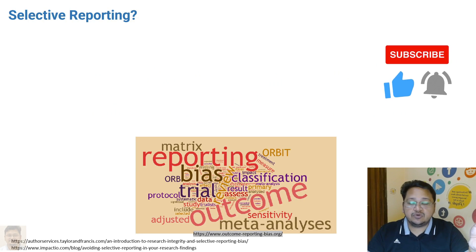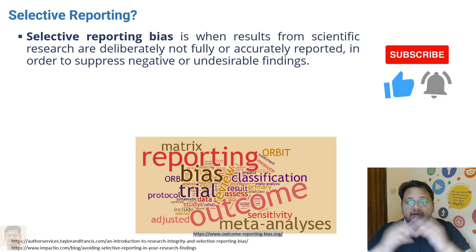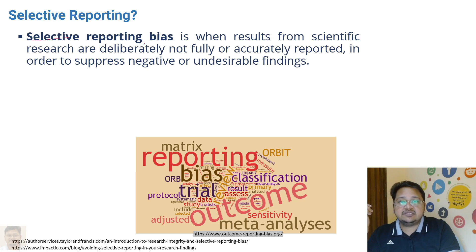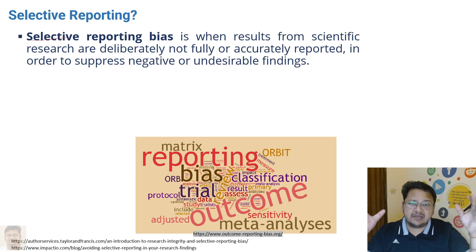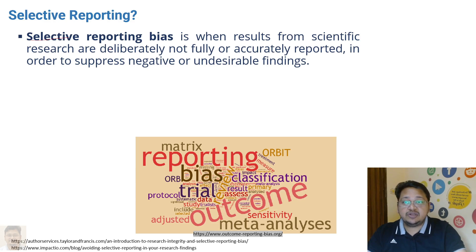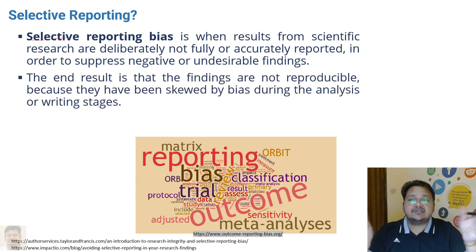Let's start today's topic on selective reporting. When we say selective reporting, we can relate it with reporting bias as well. The name itself says it — selective reporting is when results from scientific research are deliberately not fully or accurately reported, in order to suppress negative or undesirable findings. A researcher may do such a thing, and it will fall under selective reporting, which is unethical and constitutes research misconduct.